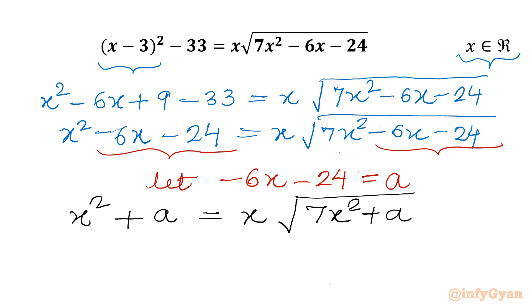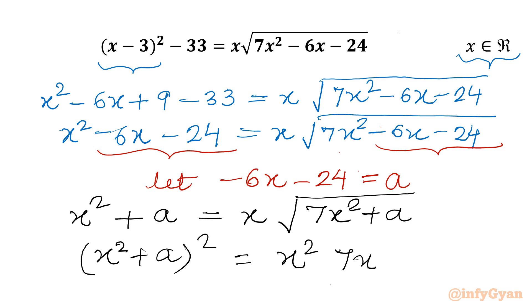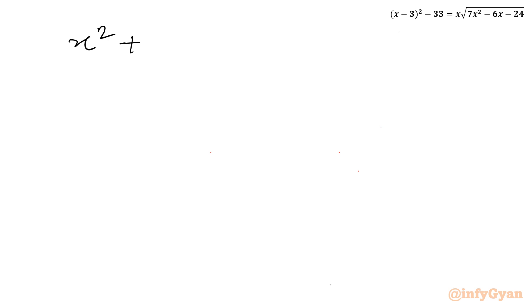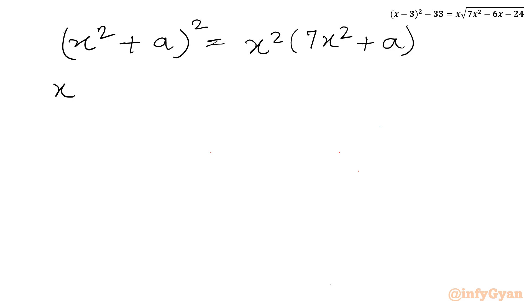Now consider squaring both sides. So the left hand side gives (x squared plus a) whole square. The right hand side becomes x squared times (7x squared plus a), since the square root and square cancel out. Applying the (a plus b) whole square identity on the left, we get x to the power 4 plus 2 times x squared times a plus a squared, equal to x squared times (7x squared plus a).